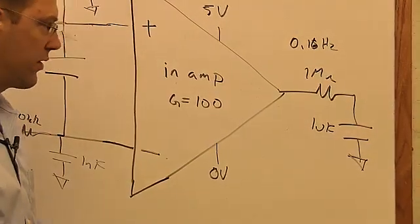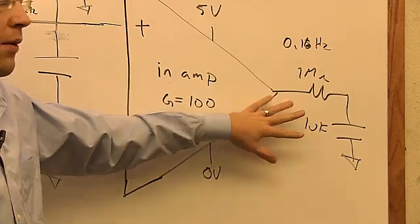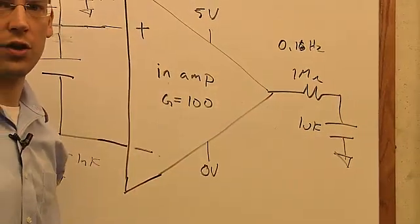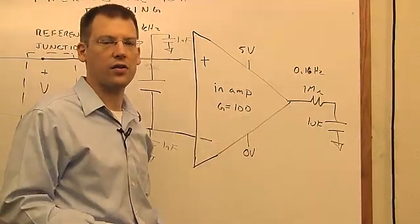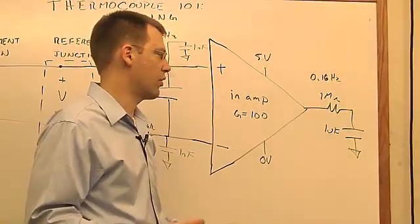Another option, instead of using some filtering here at the output, is you can use a sigma-delta converter. Sigma-delta converters normally have very nice inherent line noise filtering. So you can do that.